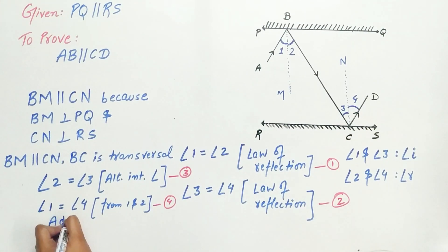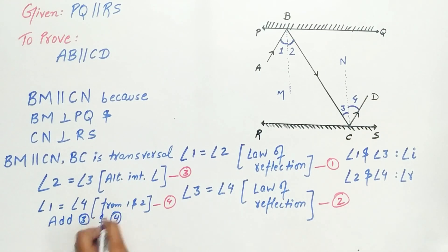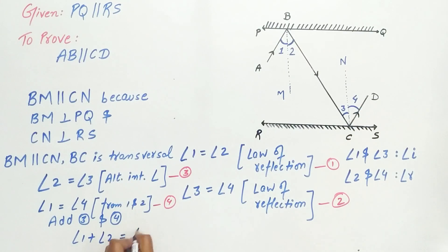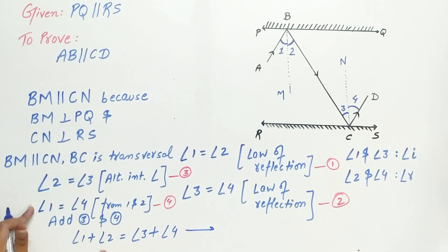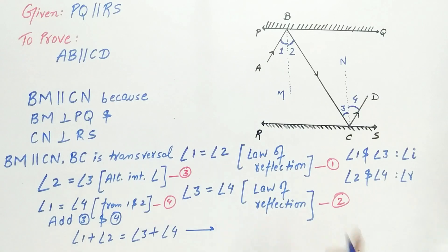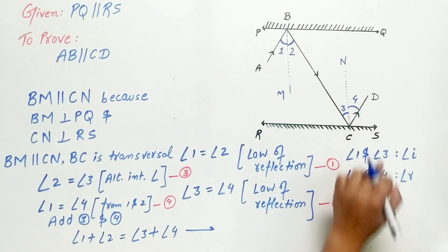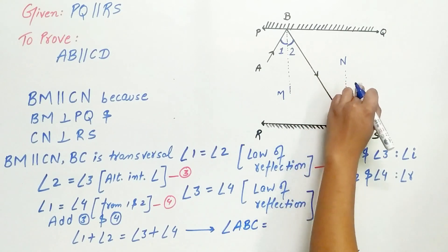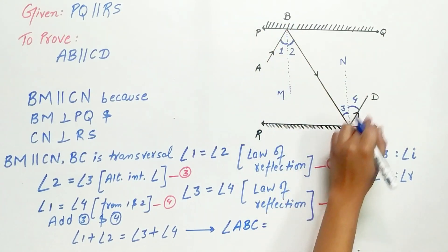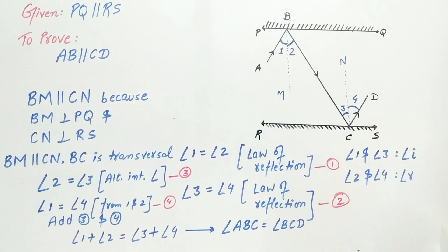Now add equation 3 and equation 4: angle 1 plus angle 2 is equal to angle 3 plus angle 4. Angle 1 plus angle 2 is angle ABC, and angle 3 plus angle 4 is equal to angle BCD.